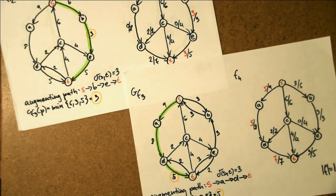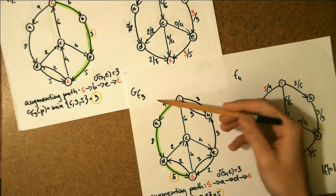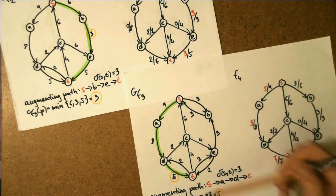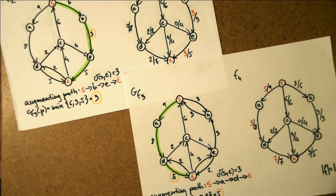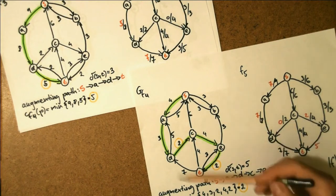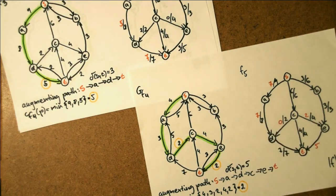We then build the corresponding residual network GF3 and we pick yet another augmenting path of length 3, this time round the other side through A and D. The flow is augmented and becomes 14.